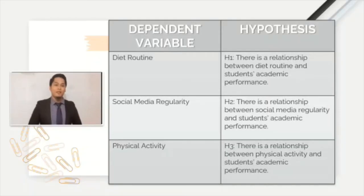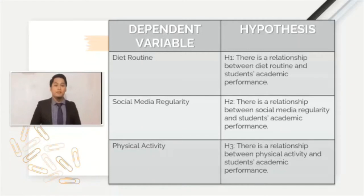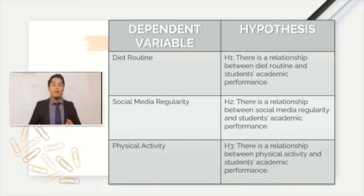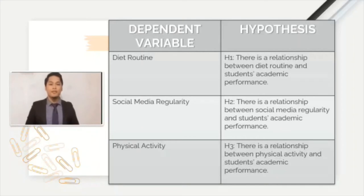Now we look at the hypothesis. Based on three dependent variables, we have developed three hypotheses. For the first dependent variable, diet routine, the hypothesis is: there is a relationship between diet routine and students' academic performance. The second hypothesis is: there is a relationship between social media regularity and students' academic performance. The third hypothesis is: there is a relationship between physical activity and students' academic performance.